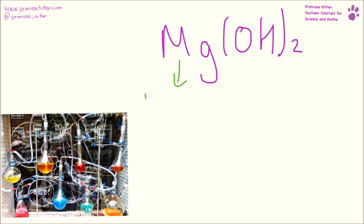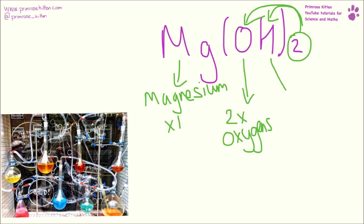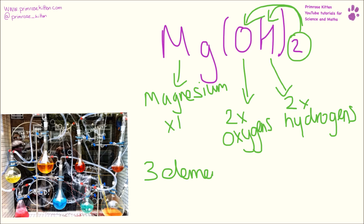So here we have magnesium and we have one magnesium. Now this two outside means there's two of everything inside, so we have two oxygens and two hydrogens. So we have three elements and we have five atoms.